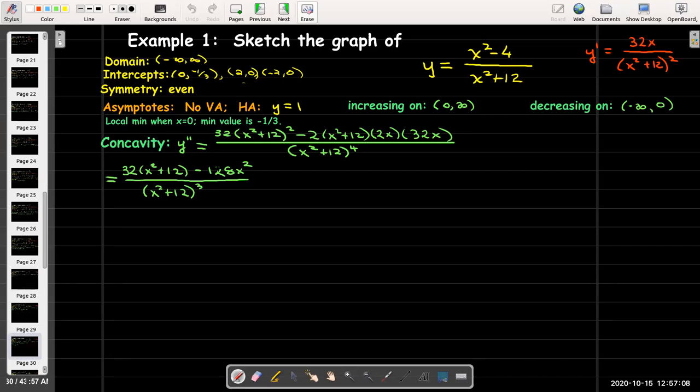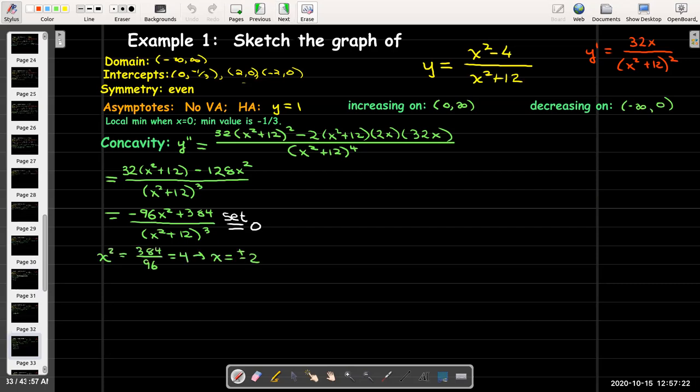I can still do some further simplifications. I'll remove the parentheses and collect the like terms, and then set that equal to zero. I can solve that by setting the numerator equal to zero. That gives me x squared equals 384 over 96, which turns out to reduce to 4. So x equals plus or minus 2.